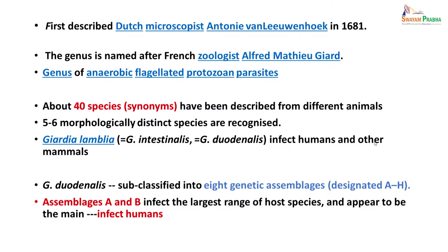Giardia was first described by Dutch microscopist Antony van Leeuwenhoek in 1681. The genus is named after French zoologist Alfred Mathieu Giard, and it is a genus of anaerobic flagellated protozoan parasites. About 40 species have been described from animals, and 5 to 6 morphologically distinct species are recognized. Giardia lamblia, also known as Giardia intestinalis or Giardia duodenalis, infects humans and other mammals. It is sub-classified into 8 genetic assemblages designated A to H, with assemblages A and B being the main ones that infect humans.